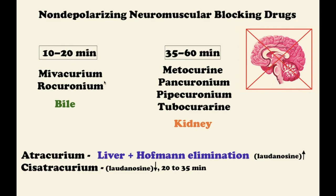Drugs eliminated by the kidney usually have a duration of action of 35 to 60 minutes. In addition to hepatic metabolism, atracurium clearance involves rapid spontaneous breakdown in plasma and tissue at normal body pH and temperature, called Hoffman elimination, to form laudanosine and other products. At high blood levels, laudanosine may cause seizures, thus atracurium is rarely used. Cis-atracurium, a stereo isomer of atracurium, is also inactivated spontaneously. It forms less laudanosine and is currently one of the muscle relaxants most commonly used in clinical practice. Duration of action is approximately 20 to 35 minutes.